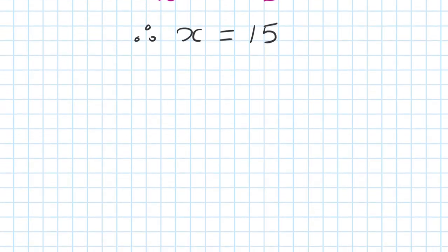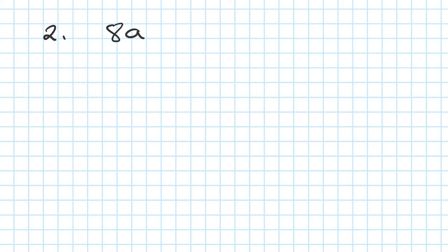Let's move on to the next one, number 2. Let's say 8a plus 20 is equal to 4a plus 10. Remember, we're going to move the letter on one side, number on the other side.